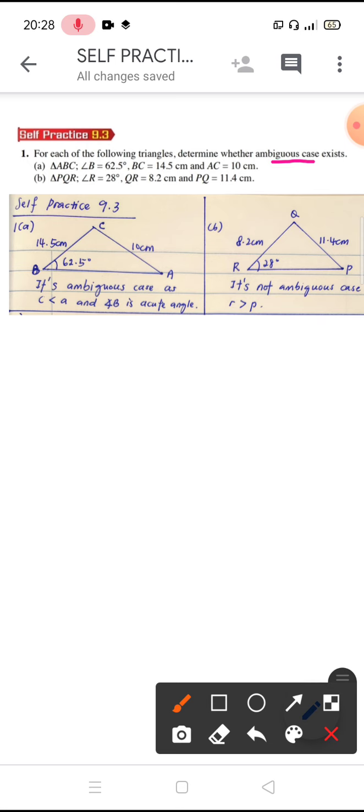Ambiguous case is a triangle which might have two types of triangle happening in this case, so we call it ambiguous cases.